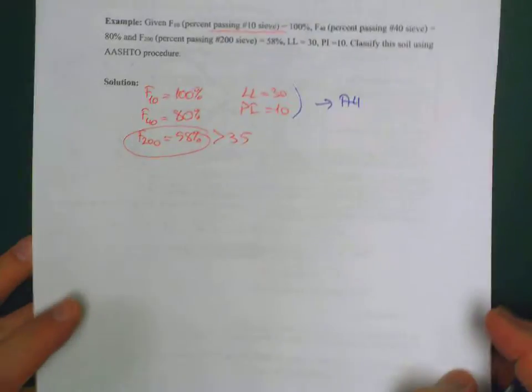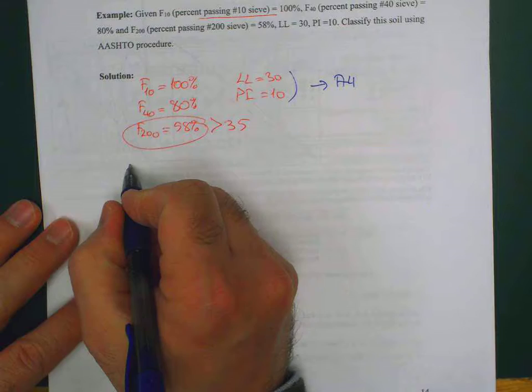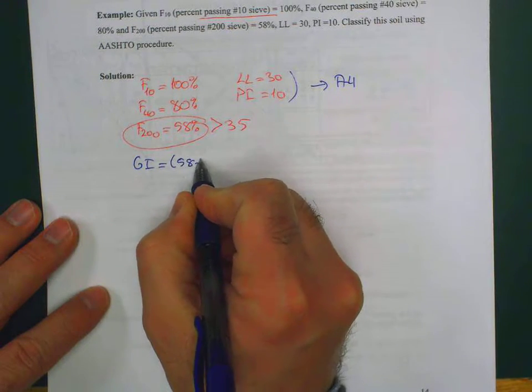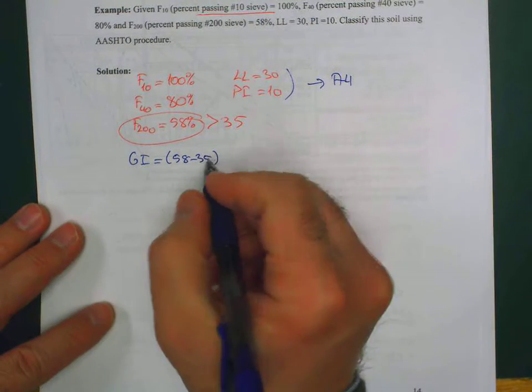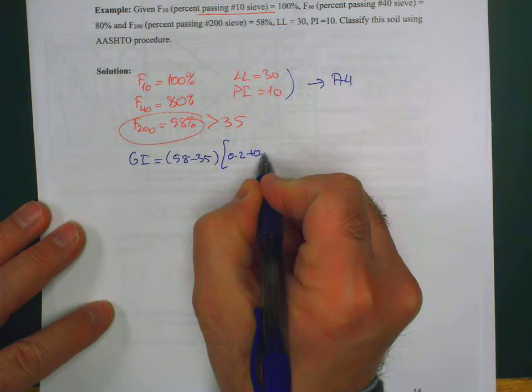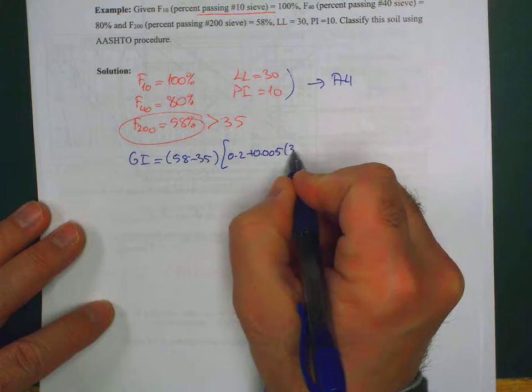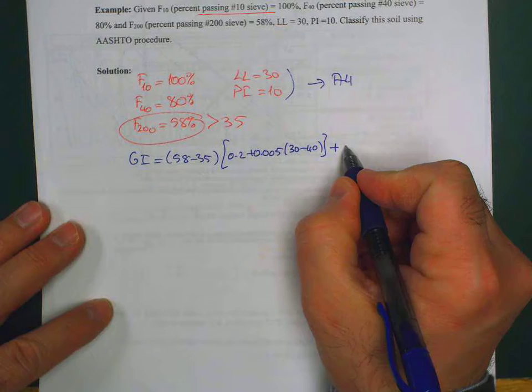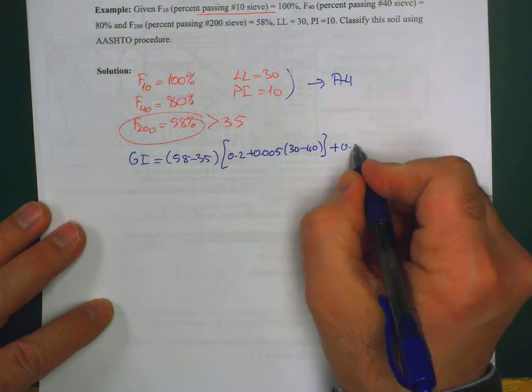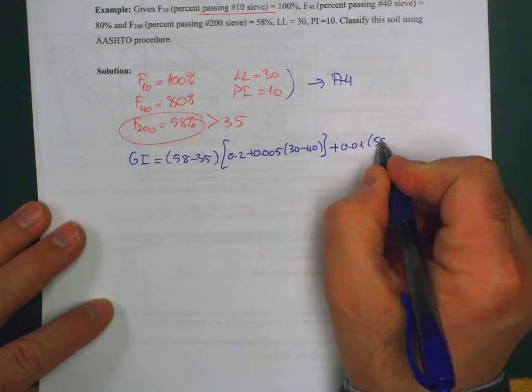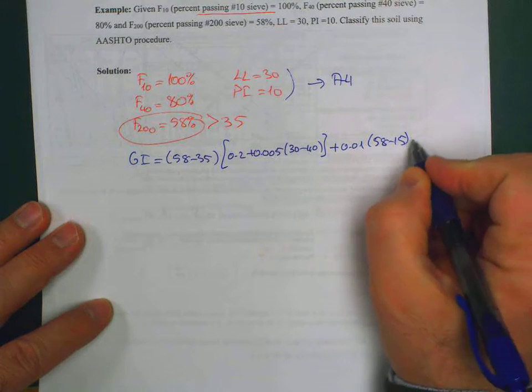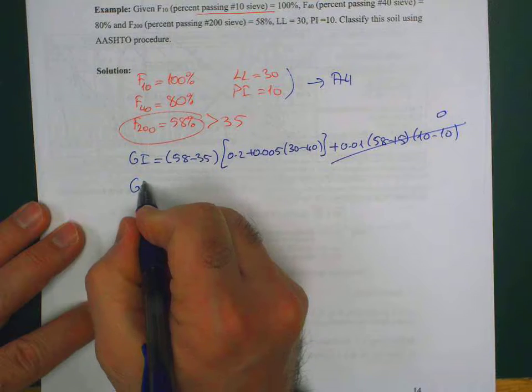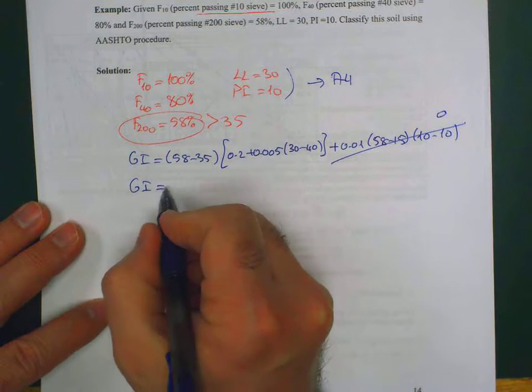Let's calculate the group index. Group index equals (58 minus 35) times 0.2, plus 0.005 times (30 minus 40), plus 0.01 times (58 minus 15) times (10 minus 10). This last term goes to zero. So group index comes out to be 3.45.